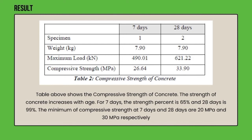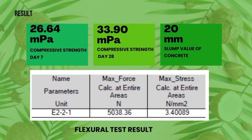These are our results for compressive strength of concrete using the cube sample. On day 7, the strength percentage is 65%, and on day 28 it is 99%. The minimum compressive strengths at day 7 and day 28 are 20 MPa and 30 MPa respectively. For the flexural test result, we obtained 26.64 MPa on day 7 and 23.90 MPa on day 28. For the slump test, we obtained 20 mm.